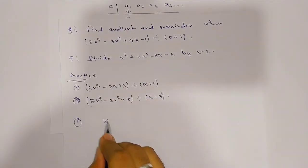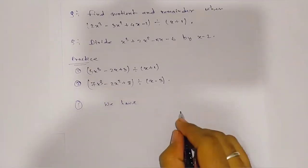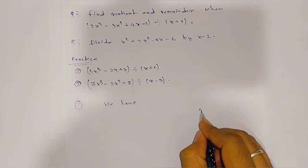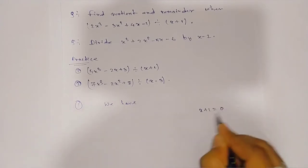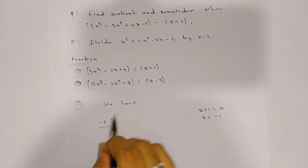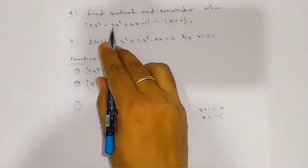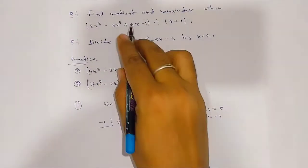Take x plus 1, compare with zero to get x equals minus 1. Write minus 1 here. Now write the coefficients: 2, minus 3, plus 4, minus 1.